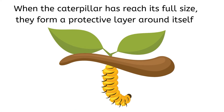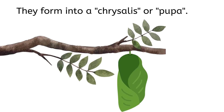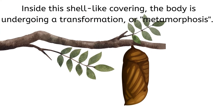When the caterpillar has reached its full size, it forms a protective layer around itself. They form into a chrysalis, or pupa. Inside this shell-like covering, the body is undergoing so many changes — this is called metamorphosis.